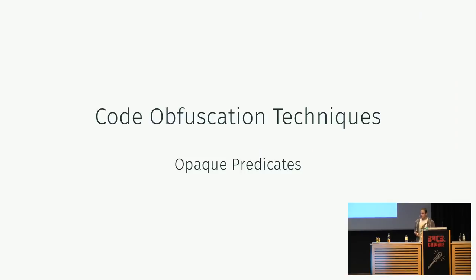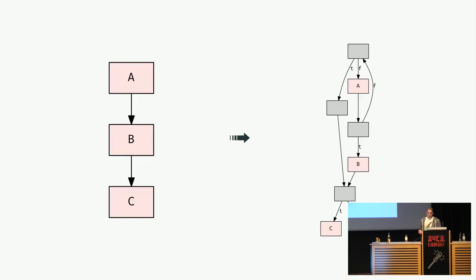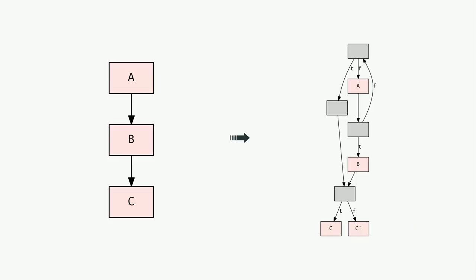One technique used in commercial protection engines is opaque predicates. Consider a simple CFG with linear control flow — if we insert opaque predicates, the program looks vastly more complex with more branches that we have to track, and we have no clue that the underlying program is in fact very simple.